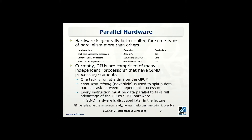If we look closer at the hardware, there are different kinds of hardware in the market that can be used for different parallel computing tasks. For example, multicore superscalar processors — such as Intel's multicore CPUs — are designed for task parallelism. They can run fairly complex tasks on individual cores at the same time.